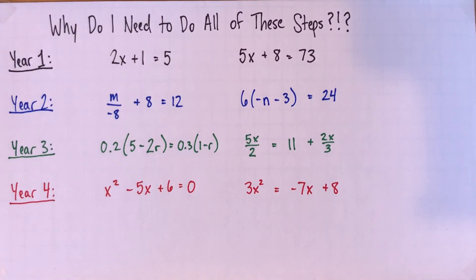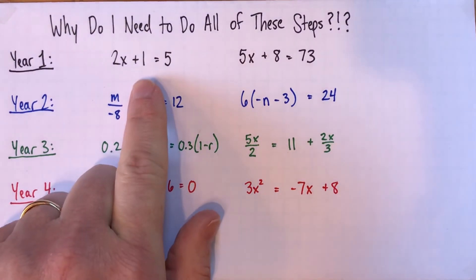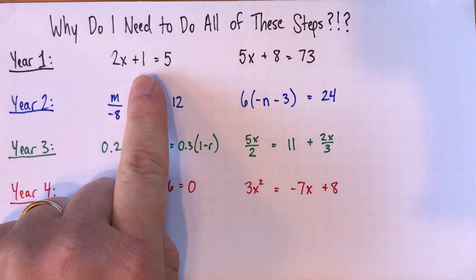Alright, so that was the first reason. It's because we need to prepare you for next year and next year and next year and next year. The second reason is actually something that teachers do to help you. But sometimes it backfires a little bit. When we're first teaching you to solve equations, we give you equations like this. And then we ask you to write five lines of work, which might feel silly.